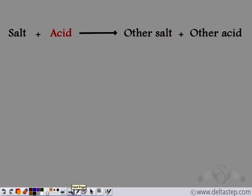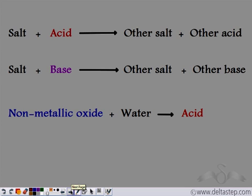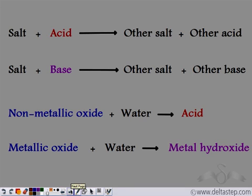To summarize the different types of reactions: when a salt reacts with an acid, it forms another salt and another acid. When a base reacts with a salt, it forms another base and another salt by displacement. When a non-metallic oxide reacts with water, it forms the corresponding acid. And when a metallic oxide reacts with water, it forms the corresponding metal hydroxide — a base. These are the different reaction types used for the formation of acids and bases.